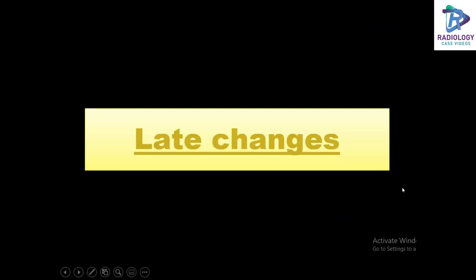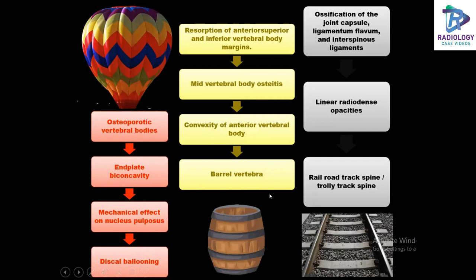What are the late changes that we see in AS? One is discal ballooning. We also see barrel vertebra and another finding called the railroad or trolley track spine. Discal ballooning occurs when osteoporotic vertebral bodies cause end plate biconcavity, and the mechanical effect on the nucleus pulposus causes discal ballooning. Barrel vertebra occurs when there is resorption of the anterosuperior and inferior vertebral body margins causing mid-vertebral body osteitis and convexity of the anterior vertebral body.